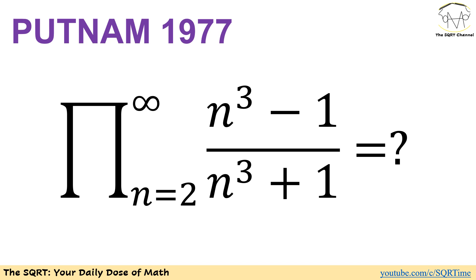Hello everyone, welcome to the SQRT channel. In this video we are going to take a problem from telescoping product. The problem came from Putnam 1977. In this problem we have a product of n cubed minus 1 over n cubed plus 1, for n between 2 and infinity.